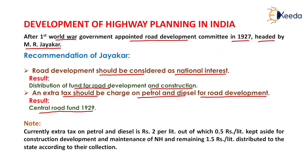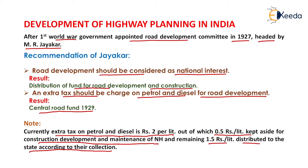The Central Road Fund is money kept for the development of existing roads. Currently, the extra tax on petrol and diesel is ₹2 per liter. Out of this, ₹0.5 per liter is kept aside for the construction, development, and maintenance of national highways, and the remaining ₹1.5 per liter is distributed to the states according to their collection.